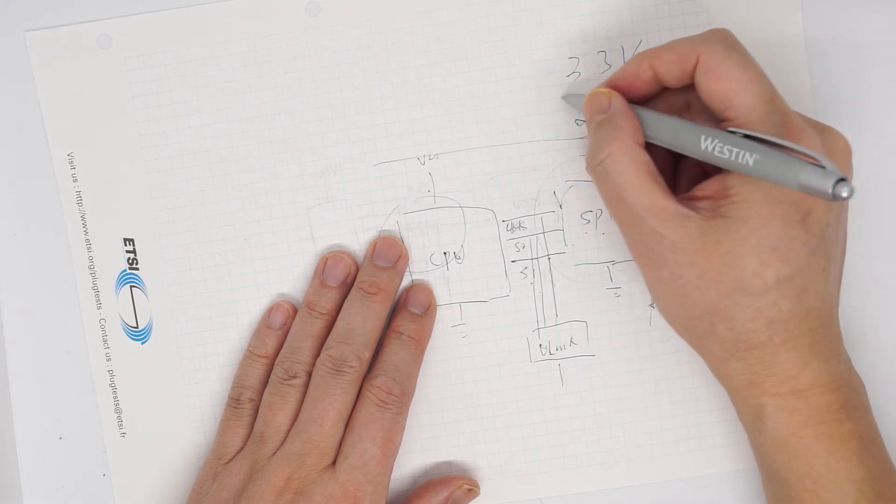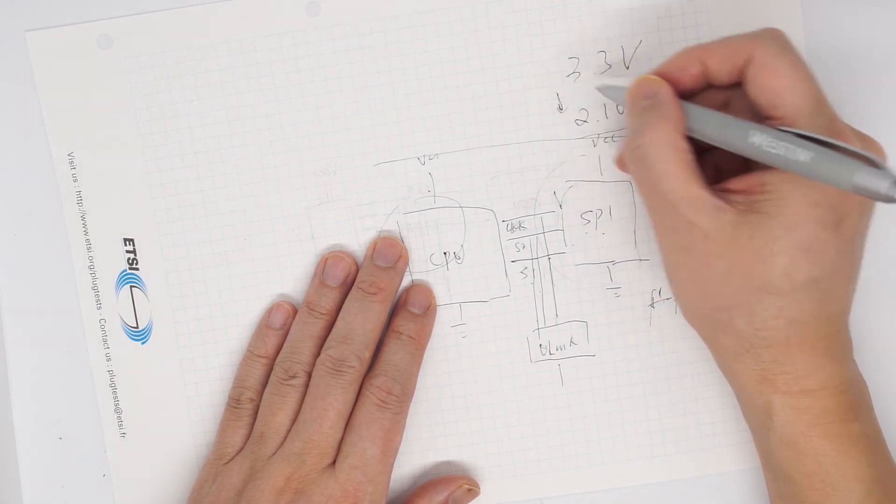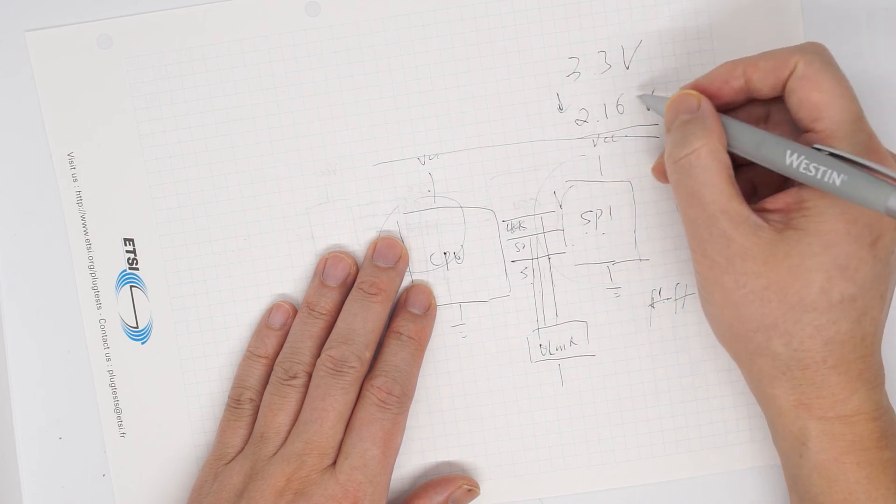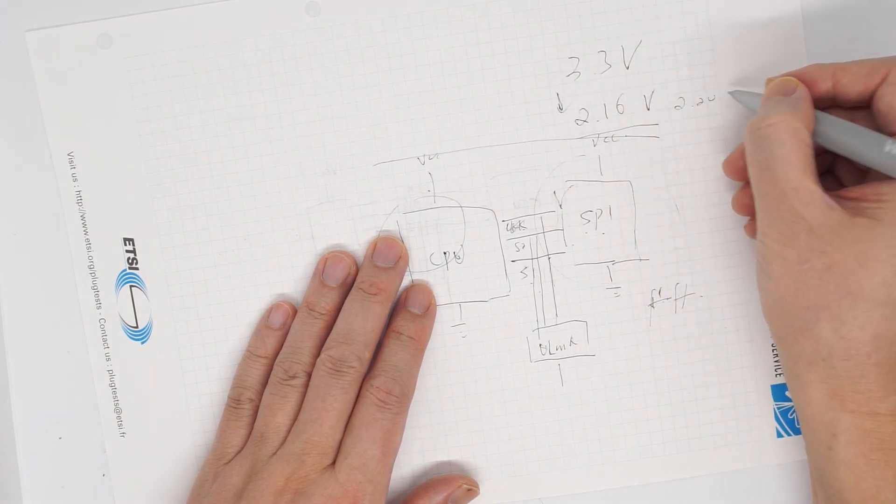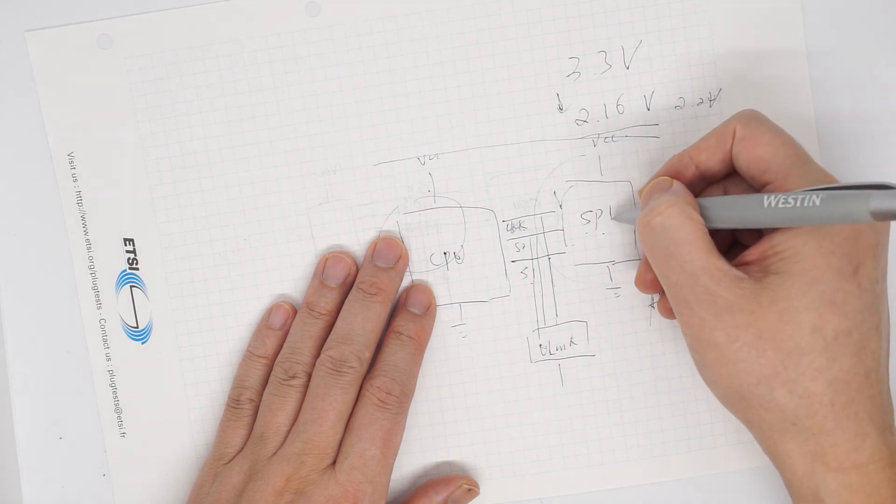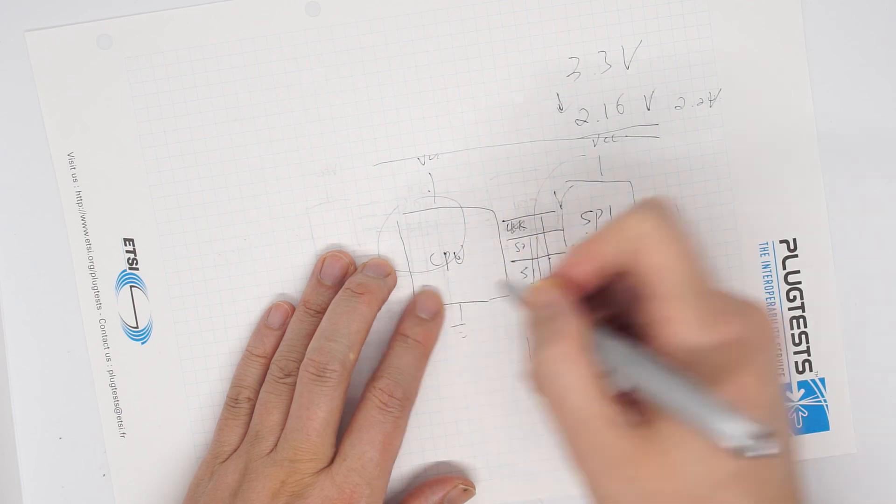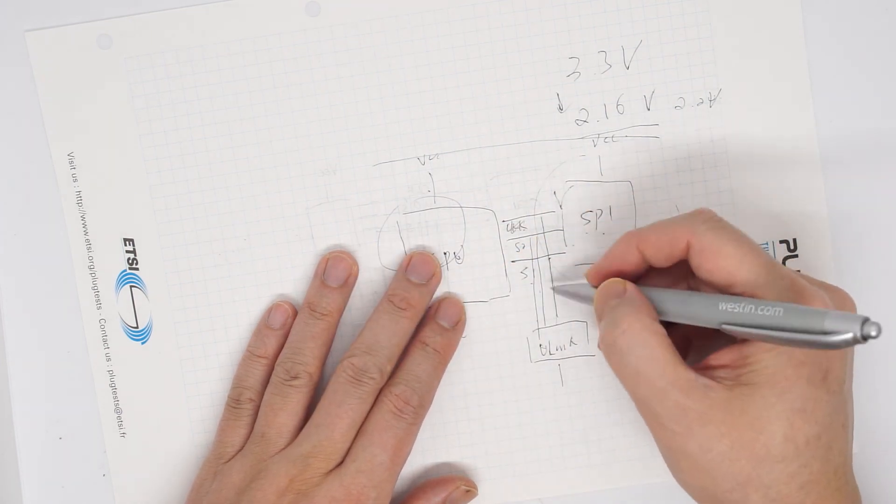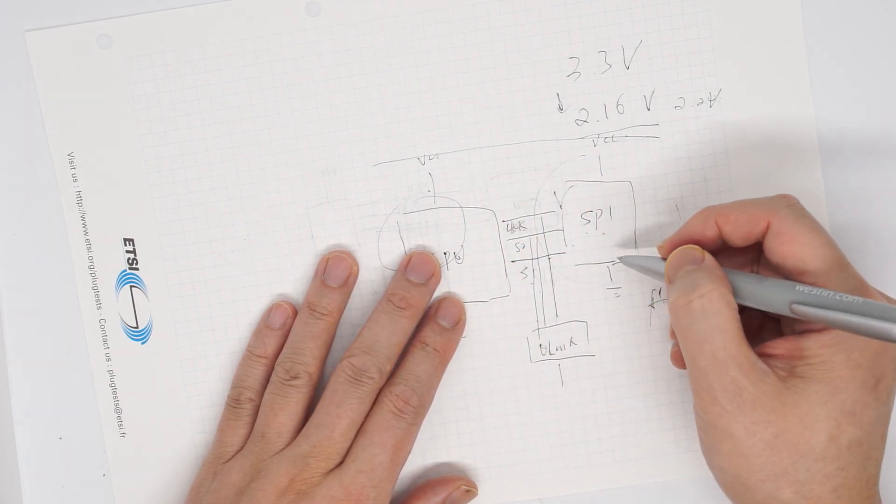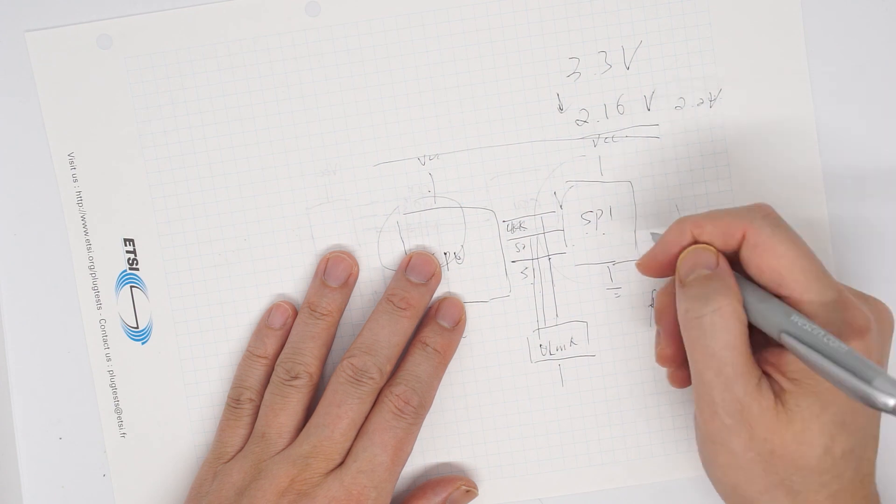But if we lower this power to 2.16 volt, or maybe 2.2 volt, and this chip is properly operational, but this is not. And during that period of time, we can talk to the SPI chip and read back and program it.